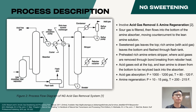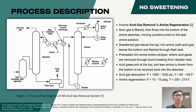A general process flow of the acid gas removal system includes the acid gas removal section and the amine regeneration section. The feed sour gas is filtered and flows into the amine absorber, where it contacts the lean amine solution in counter-current direction. The sweetened natural gas leaves the top of the absorber, while the rich amine containing the acid gas content leaves at the bottom, and flashes through the flash tank to remove dissolved hydrocarbons and condensates.